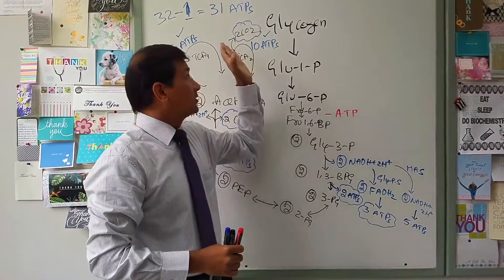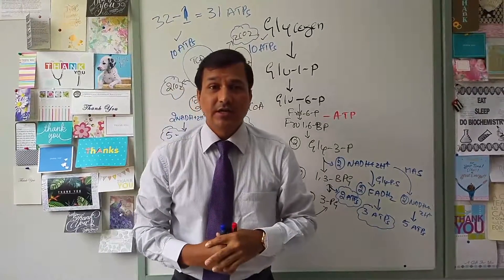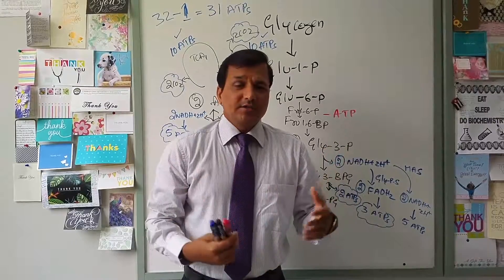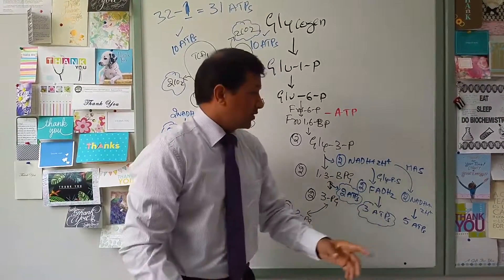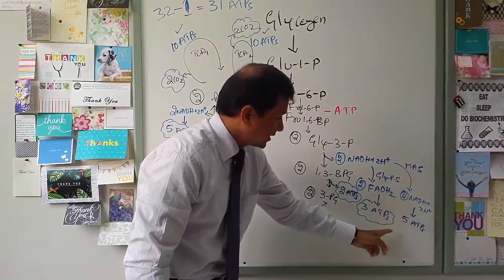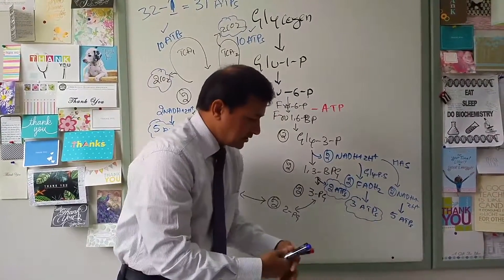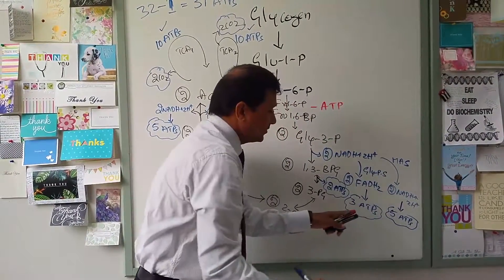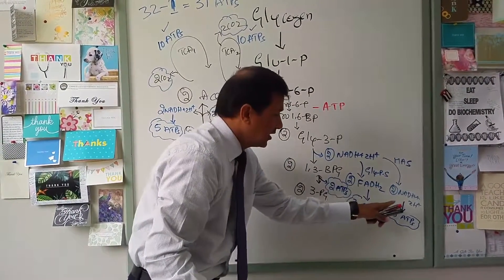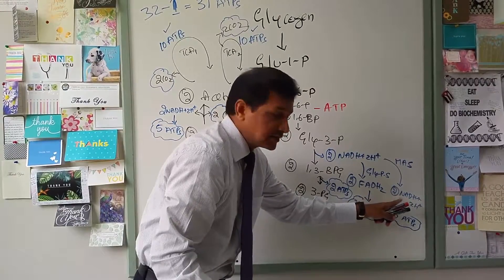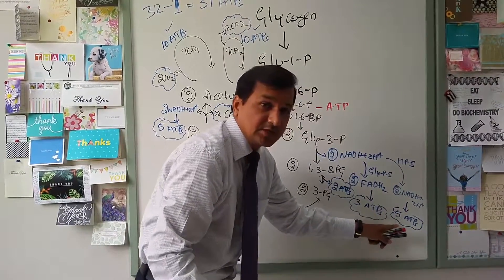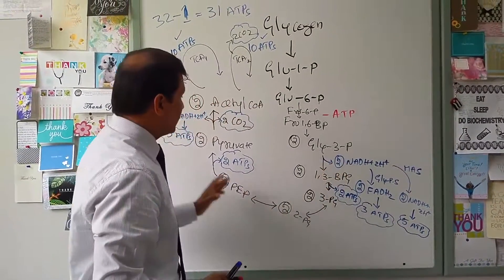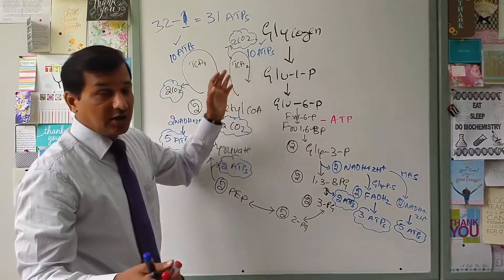For tissues using the malate-aspartate shuttle mechanism, you get 5 ATPs from cytoplasmic NADH instead of 3 ATPs — a difference of 2 ATPs. The glycerol phosphate shuttle gives 3 ATPs while the malate-aspartate shuttle gives 5 ATPs; all other numbers remain the same.